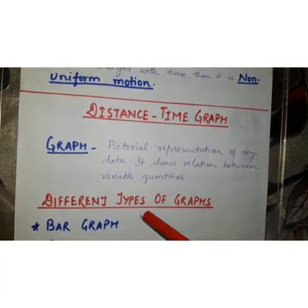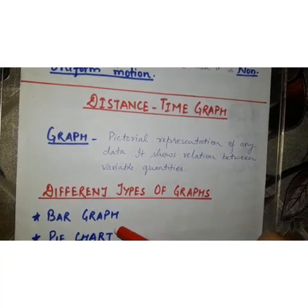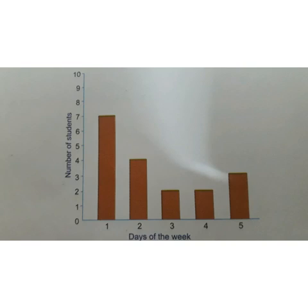There are different types of graphs. Bar graph, pie chart and line graph. In bar graph, data is being represented by drawing different bars. For example, this bar graph is showing you the number of students absent during a week.